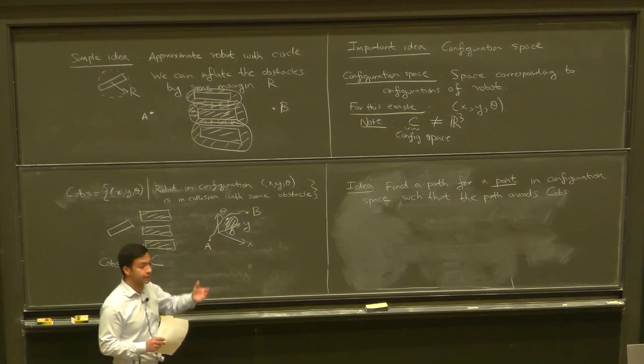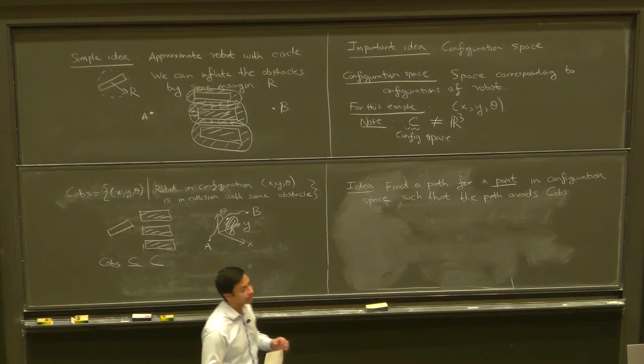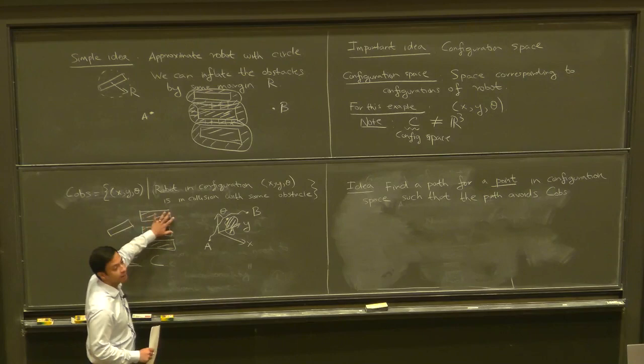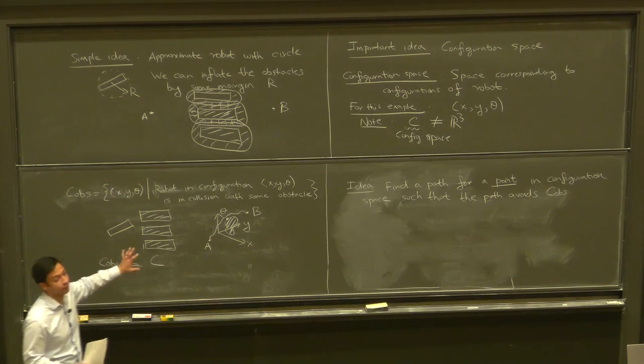A student notes that the goal orientation might not matter, meaning the goal could be a set rather than a single point. For example, if orientation doesn't matter, the goal set in configuration space would be a vertical line through the goal (x, y) — any theta is allowed. Also, C_obs represents the obstacle knowledge: given the obstacle locations, you could construct C_obs. We're still assuming we know what the obstacle locations are.